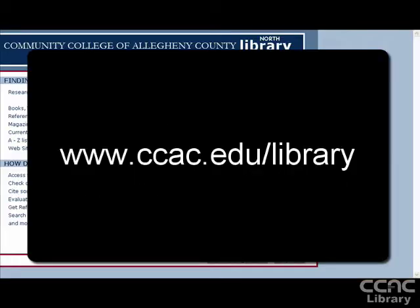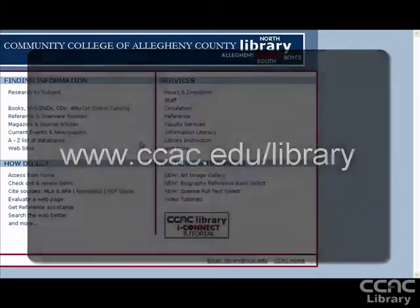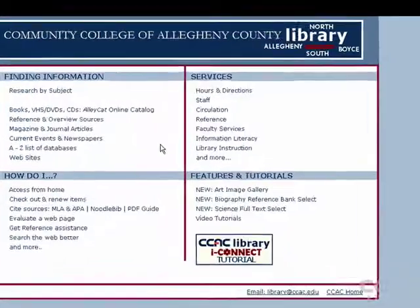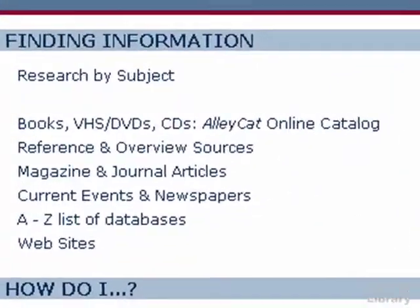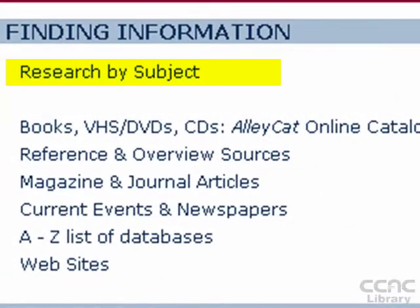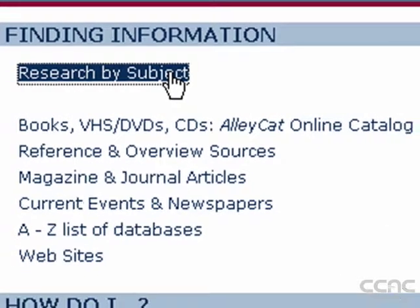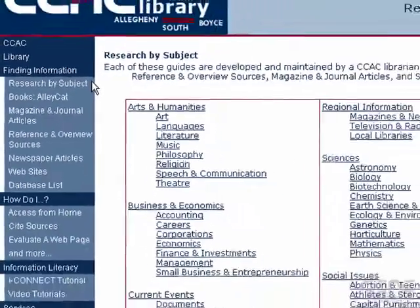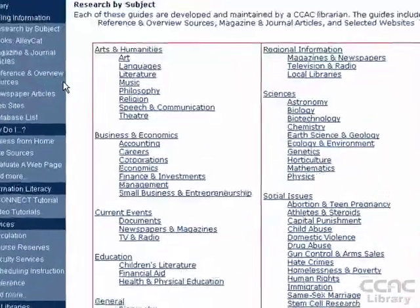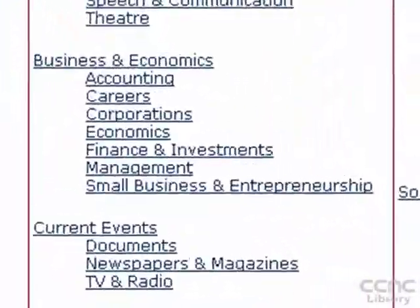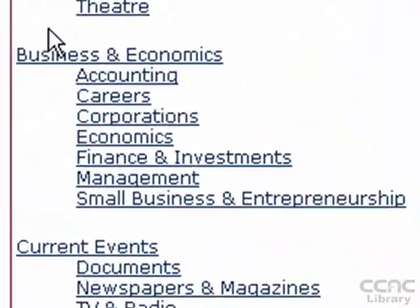To start using the EBSCOhost system, you'll need to connect to it from the library's website. Once there, you'll find a variety of ways to access our research databases. One way is to use the Research by Subject guide. Here you will find all of our electronic resources grouped by subject area.